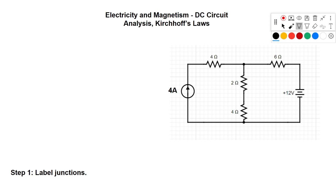Here's our example. We have one voltage source — 12 volts — and one 4-amp current source, and then a bunch of resistors in the middle. The first step is to label our junctions, which are the points where the circuit branches. We'll label our two junctions J1 and J2 — it doesn't matter which is which.